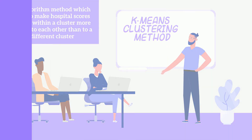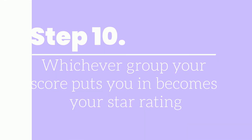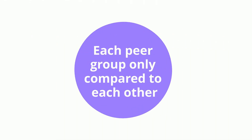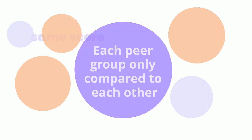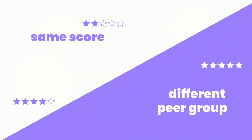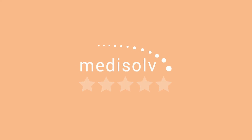And finally, for step 10, whichever group your score puts you in becomes your star rating. Since hospitals in a peer group are being compared only to each other, that means hospitals with the same score but a different peer group could receive different star ratings. And that is how CMS calculates a hospital star rating.